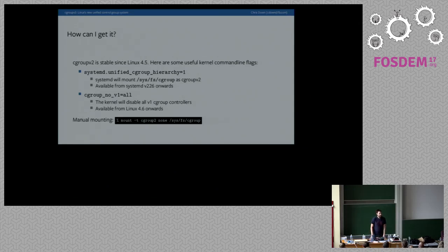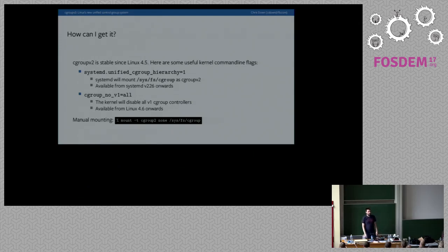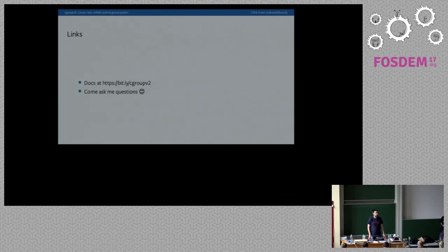Hopefully you're interested in trying out cgroupv2 yourself. First you need a kernel above 4.5 — that's the first point where we have a stable API. Once that's done, you need to turn off all the controllers for V1 and turn on and mount the filesystem for V2. Typically you want your init system to do this; for systemd you use a specific flag on the kernel command line. If you're interested in hearing more about cgroups, come talk to me. If you've used V1 in the past and found it lacking, please do try out V2 and let us know what you think.